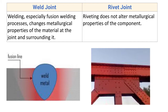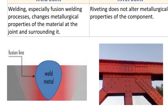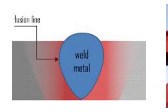Welding, especially fusion welding, changes the metallurgical properties of the material at the joint and surrounding it. The metallurgical changes are inherent to the welding process. The metal is heated to an elevated temperature and then cooled, causing metallurgical changes in the weld bead and the surrounding heat-affected zone.